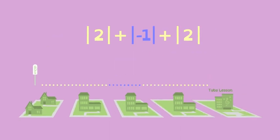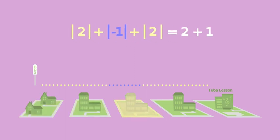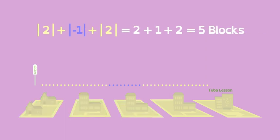Absolute value shows us how much she actually walked. Two blocks forward, plus one block back, plus two blocks forward, for a total of five blocks. Phew!